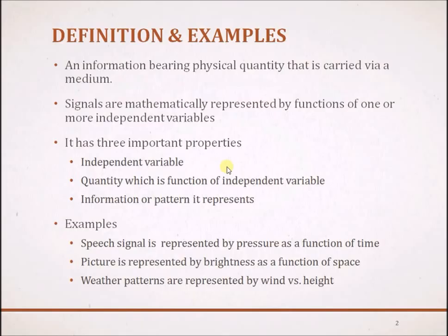A signal can be defined as an information bearing physical quantity that is carried via a medium. Here the medium is usually a physical medium such as air or empty space, and signals are mathematically represented by using functions of either one or multiple independent variables. These independent variables are usually time, space, etc.